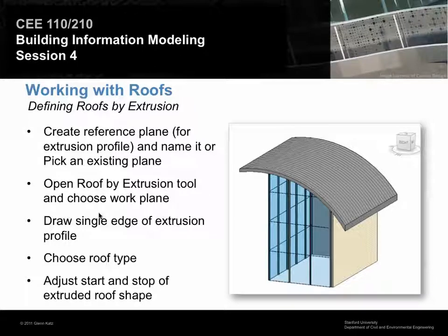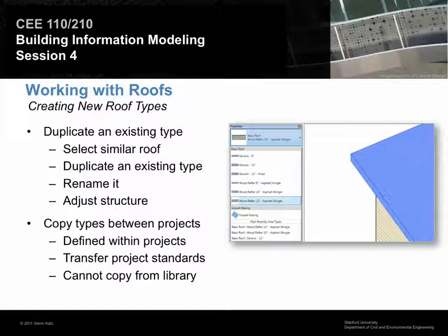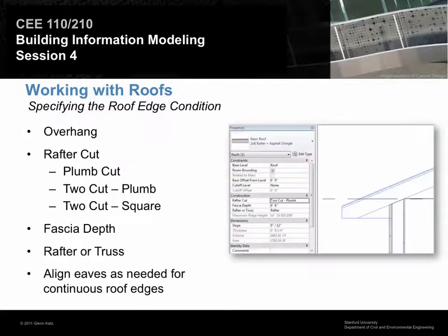To finish up: creating new roof types. You pretty much know how this works because you did it with floors and walls — choose one of the existing roof types, duplicate it, adjust the structure, adjust the layers and thicknesses. It works just like walls and floors. If you want to take a roof type defined in one project and move it to another, that's Transferring Project Standards. Any of these multi-layer things — walls, ceilings, roofs, floors — we don't save those to the library and pull them in; we have to open two projects and transfer between them. Components like furniture, windows, and doors get saved to the library, but these you transfer.